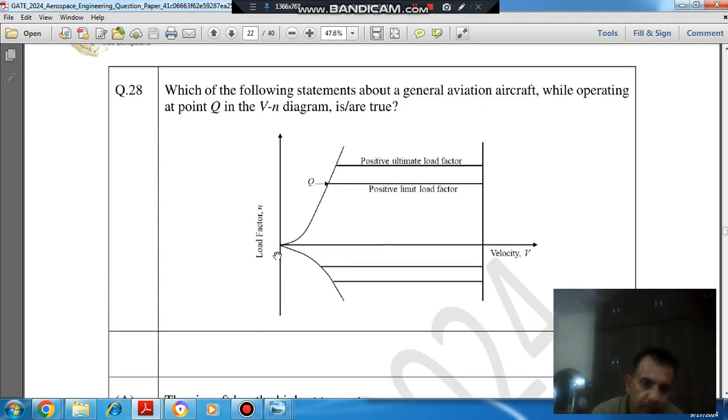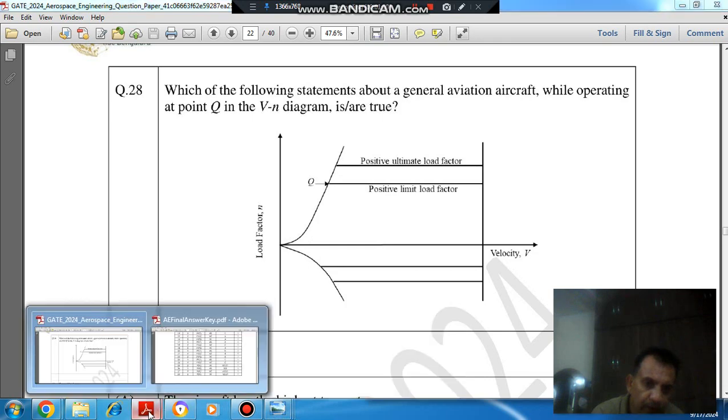So here, we can see that point Q is lying on this curve. And this line refers to stall condition. And at point Q, this is the positive limit load factor. So this means load is not exceeding beyond that. It is the maximum load factor.